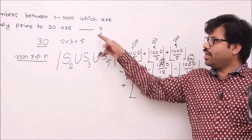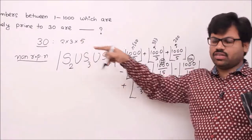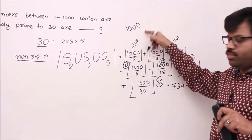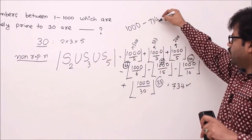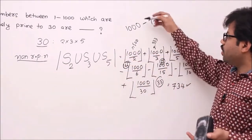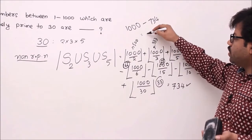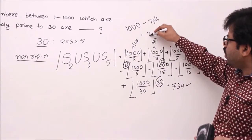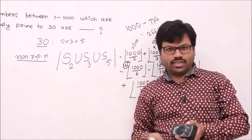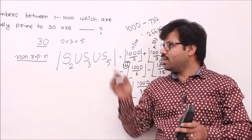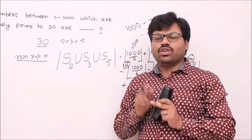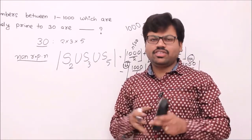My numbers are those which are NOT in this set — i.e., neither divisible by 2, nor 3, nor 5, so they don't have 2, 3, or 5 as factors. Total numbers from 1 to 1000 is 1000; subtract 734 to get 1000 − 734 = 266. There are 266 integers between 1 and 1000 that are relatively prime to 30.